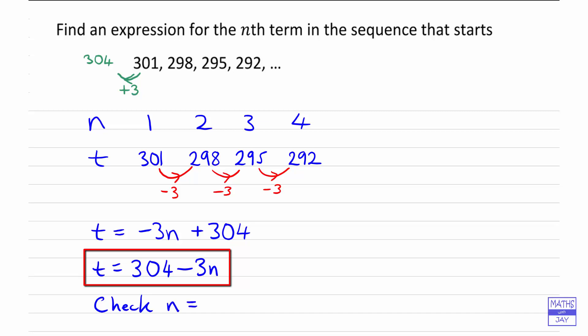So when n is 2, then our formula gives 304 - 3 × 2, so 304 - 6, which is 298. And that is what the second term is.